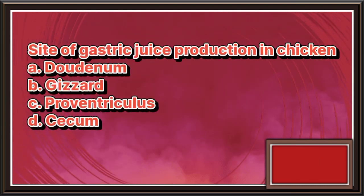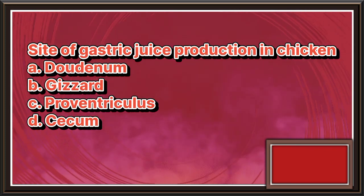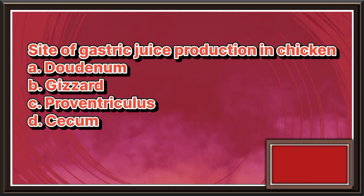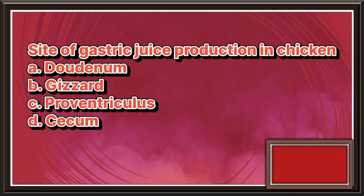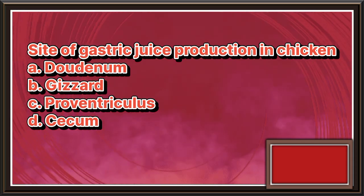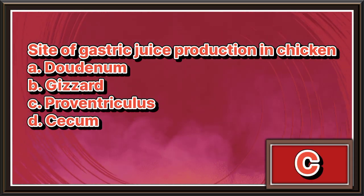Site of gastric juice production in chicken. A. Duodenum. B. Gizzard. C. Proventriculus. D. Cecum. The answer is letter C.